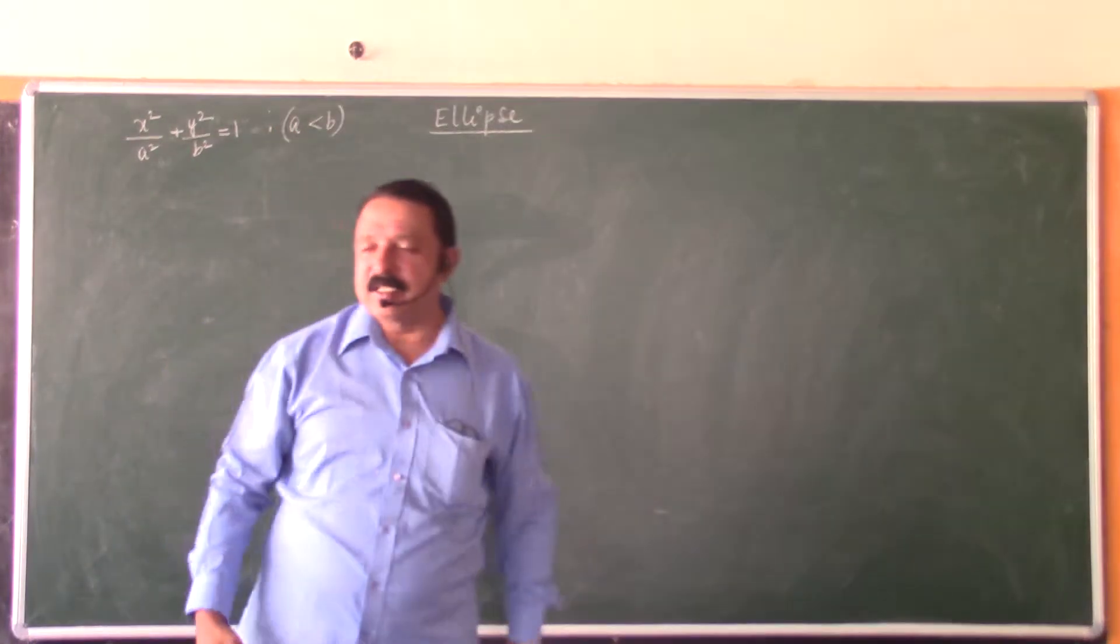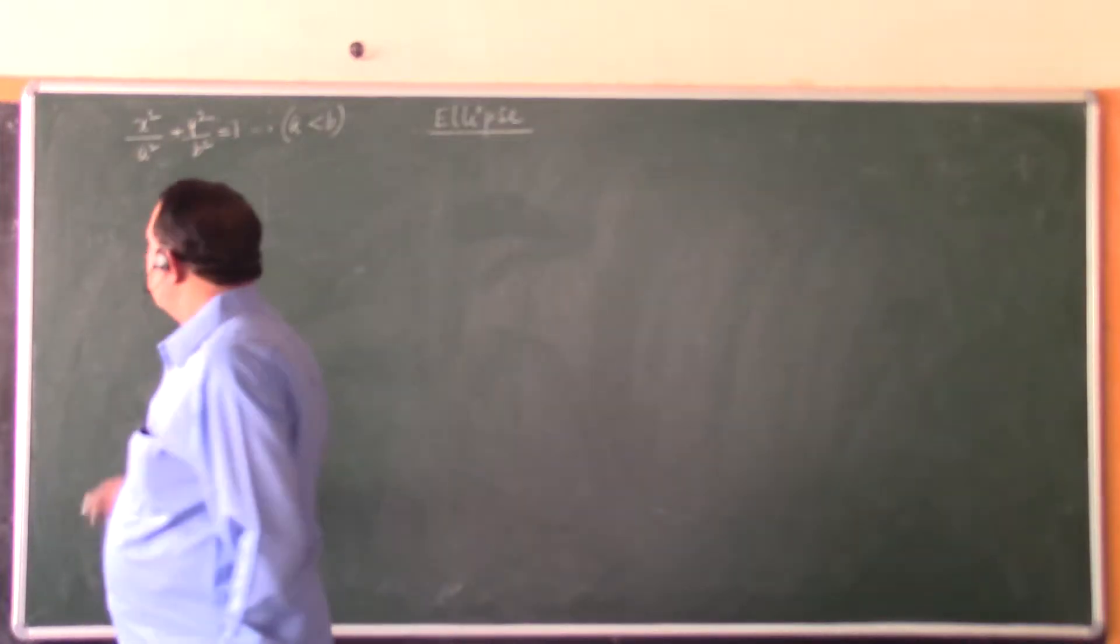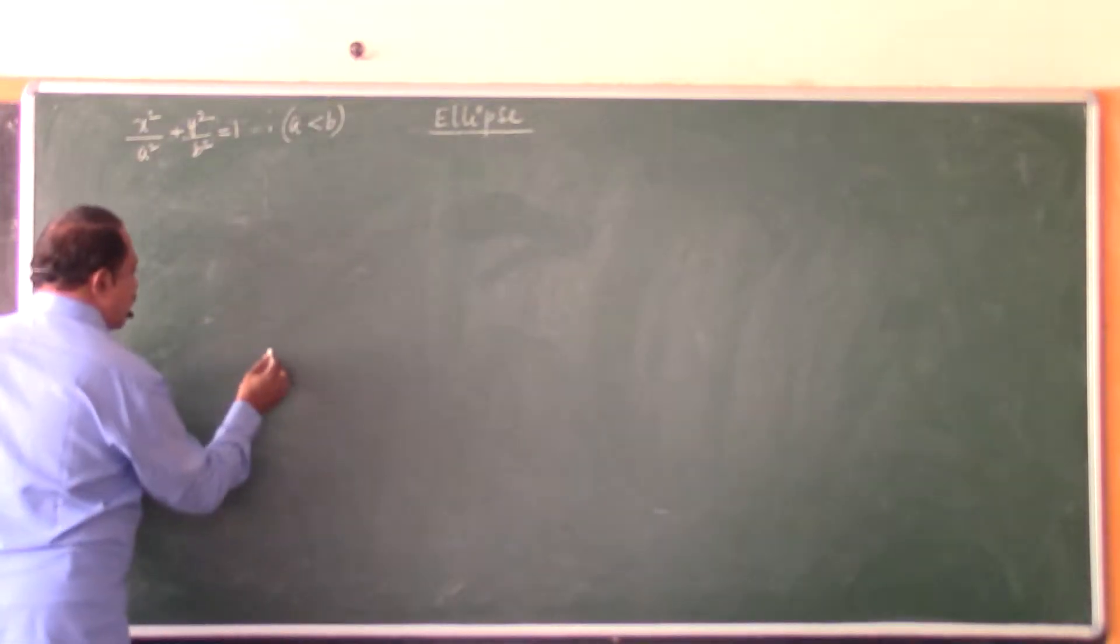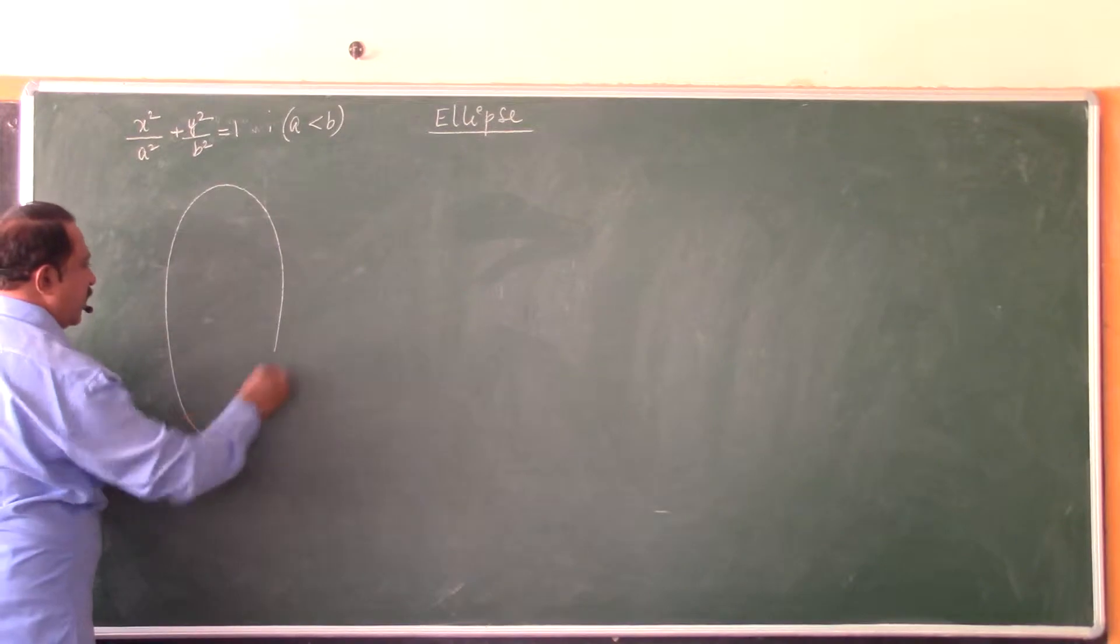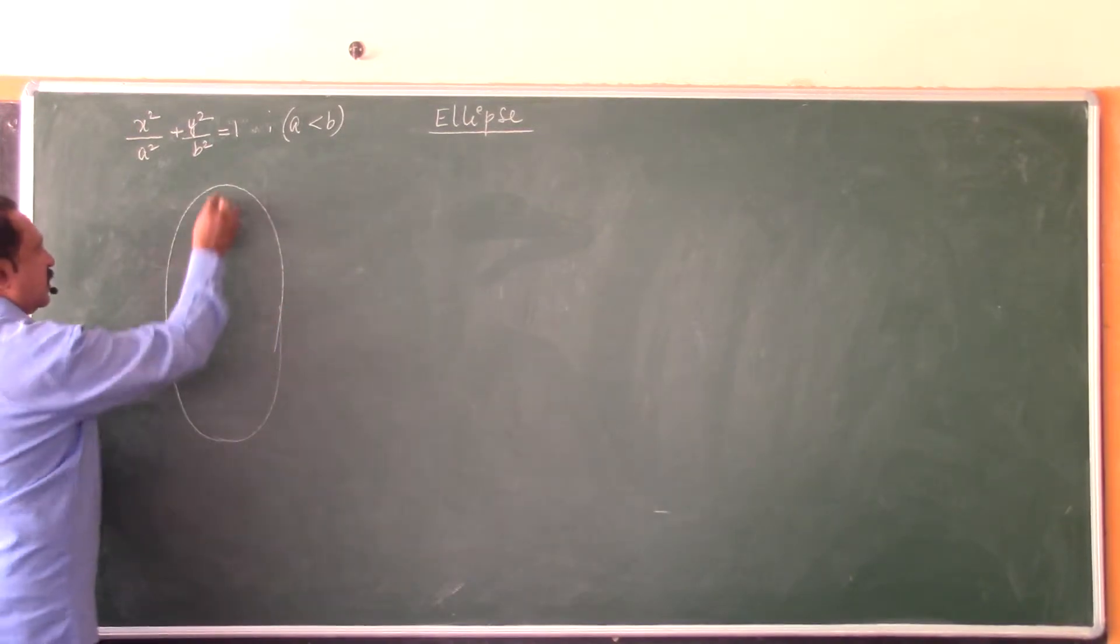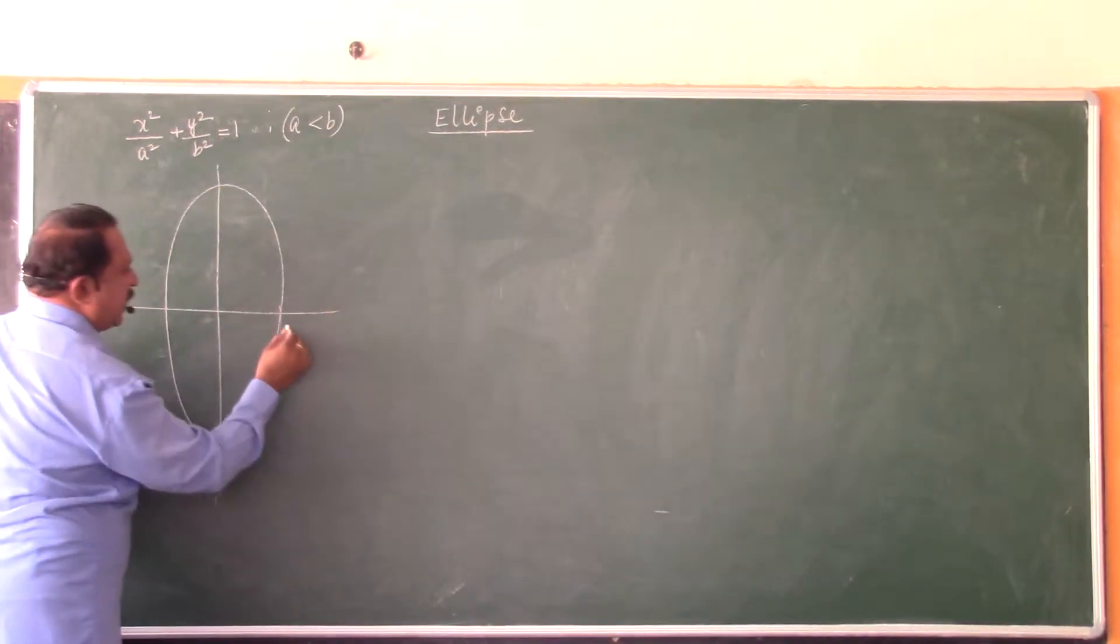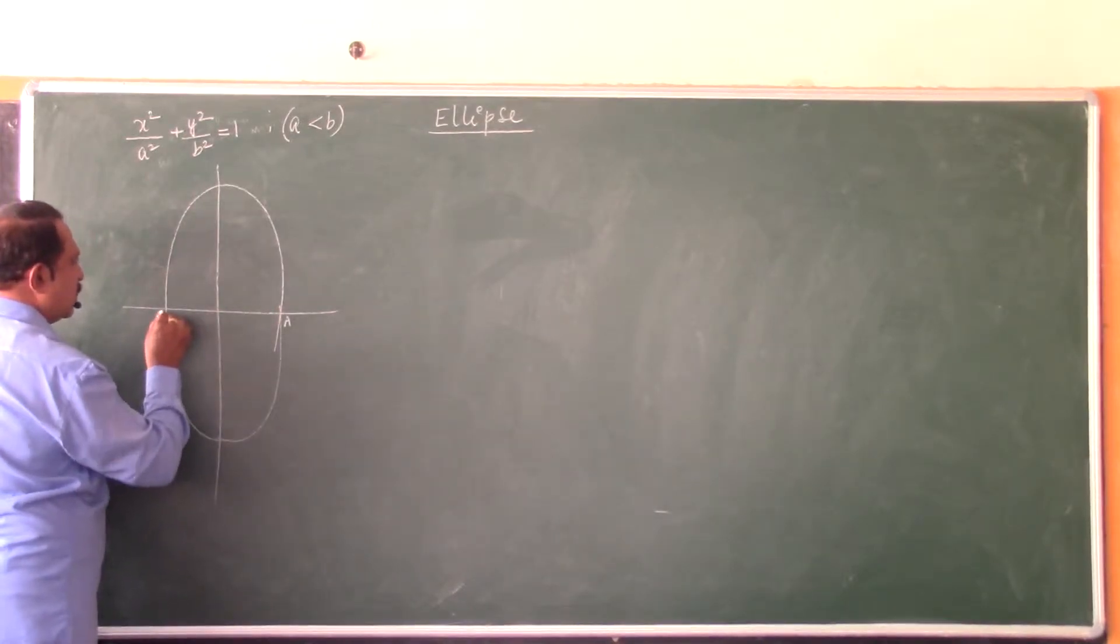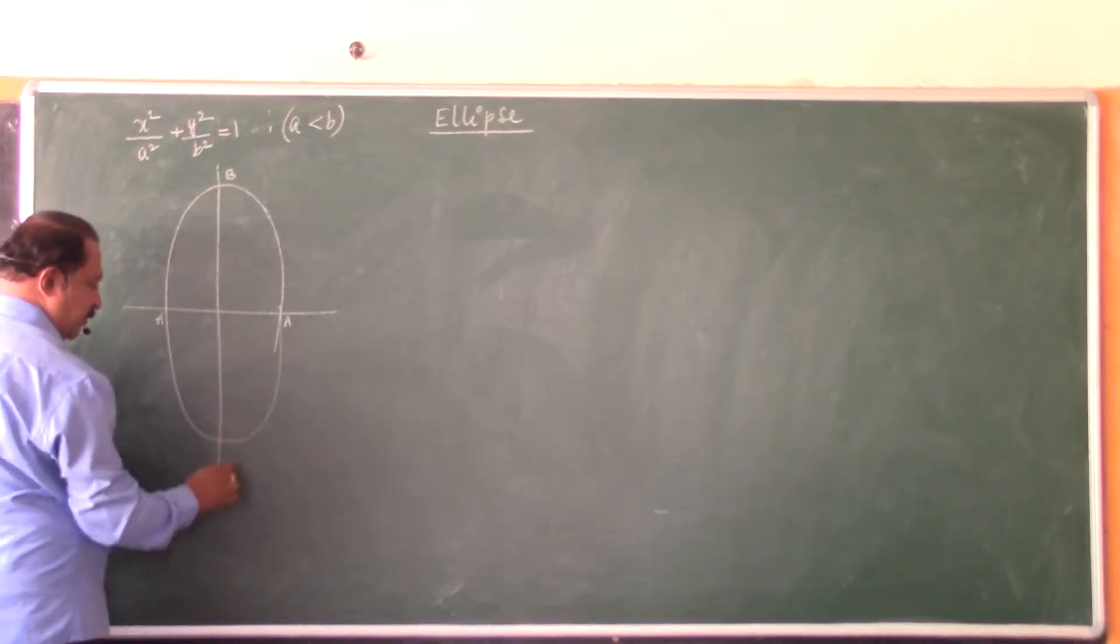If a is less than b, then the ellipse should be a vertical ellipse like this. See, this will become b, this will become a. This is a a', b b'.